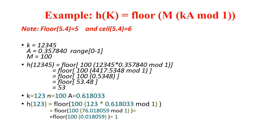The keys given are 1, 2, 3, 4, 5. For the A value, you can select any value in the range 0 to 1. I have selected A = 0.357840 and my table size is 100. Now I will apply the multiplication method. I have already selected A, so I multiply with K×A — that is key times A value. After multiplication, I get 4417.5348.